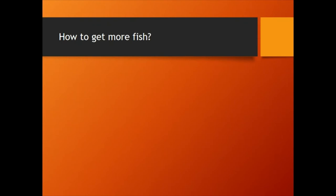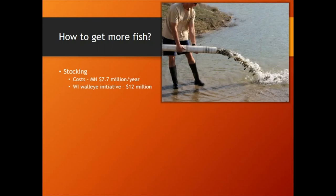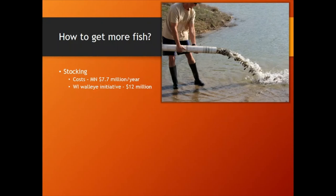People always ask how to get more fish in a lake. The answer most people want to hear is stocking. What stocking does is get a fish up to recruit level — if you get a little fish up to that recruit level, chances are it's going to survive to adulthood. Wisconsin and Minnesota put a ton of money into stocking every year. Minnesota spends $7.7 million a year on stocking programs. Wisconsin had a four or five year walleye initiative that cost $12 million total just for walleye, on top of their general stocking budget. One of my favorite ways to stock fish is dropping them into a lake in Alaska via airplane — yes, some of those will die, but a decent amount will make it.